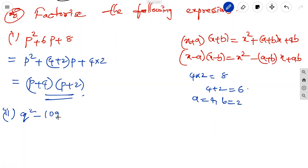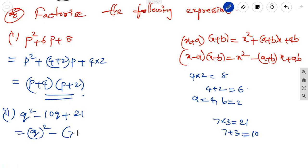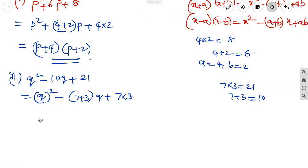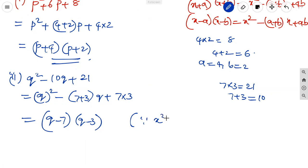Second question: q² - 10q + 21. Here 7 × 3 = 21 and 7 + 3 = 10. Using the identity x² - (a + b)x + ab = (x - a)(x - b), the factors are (q - 7)(q - 3).